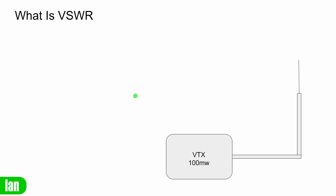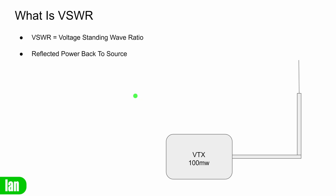We're going to start with what is VSWR, or what is also known as SWR. The term stands for voltage standing wave ratio and it is basically the amount of reflected power back to the source. If we take a look at this little diagram on the bottom right hand side, you can see we have a little video transmitter with 100 milliwatts of output, our coax cable and our antenna. For this first demonstration we're going to assume this is the perfect antenna — all of the power from the transmitter goes up to the antenna and all of that power is radiated out as radio waves.